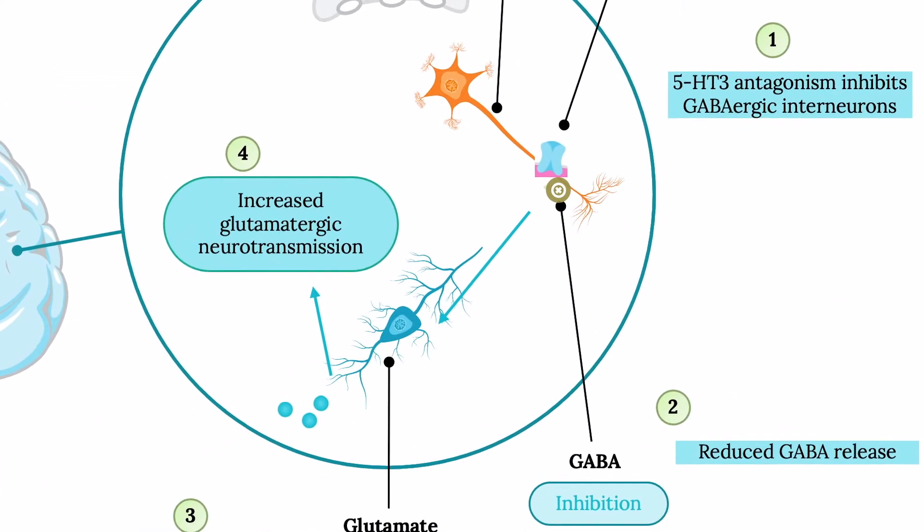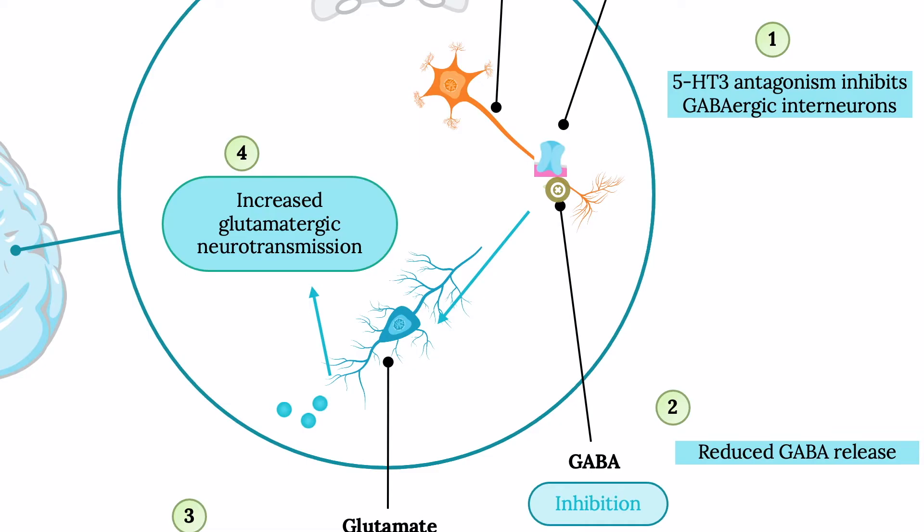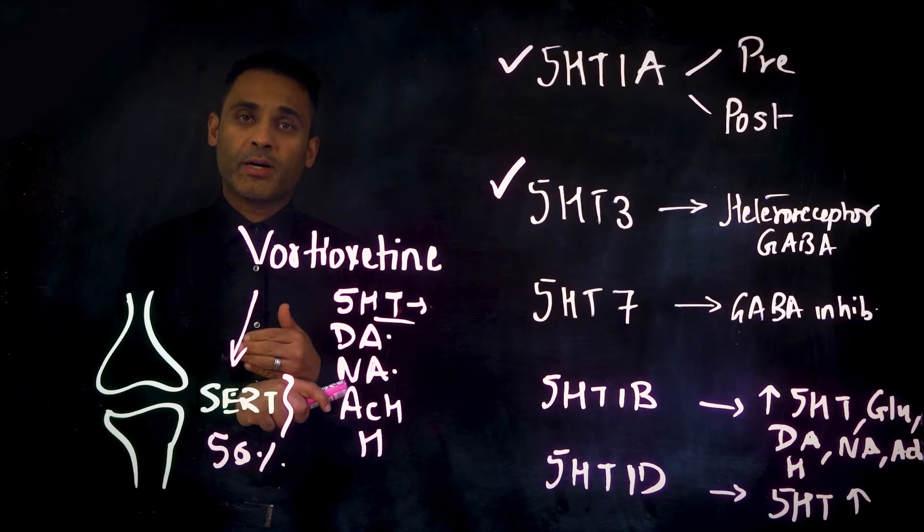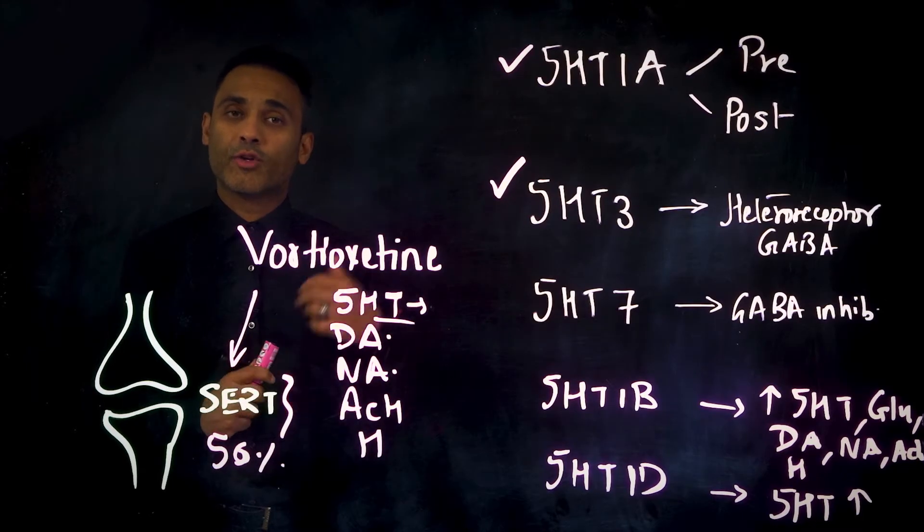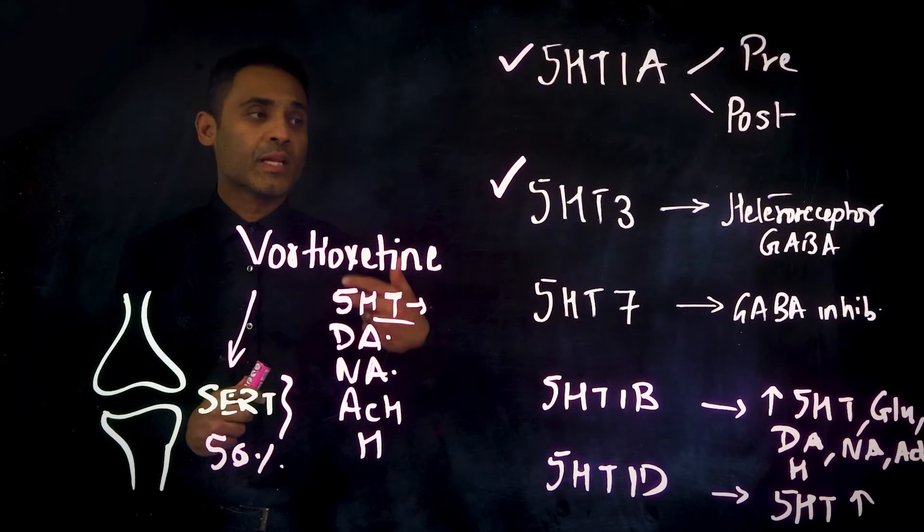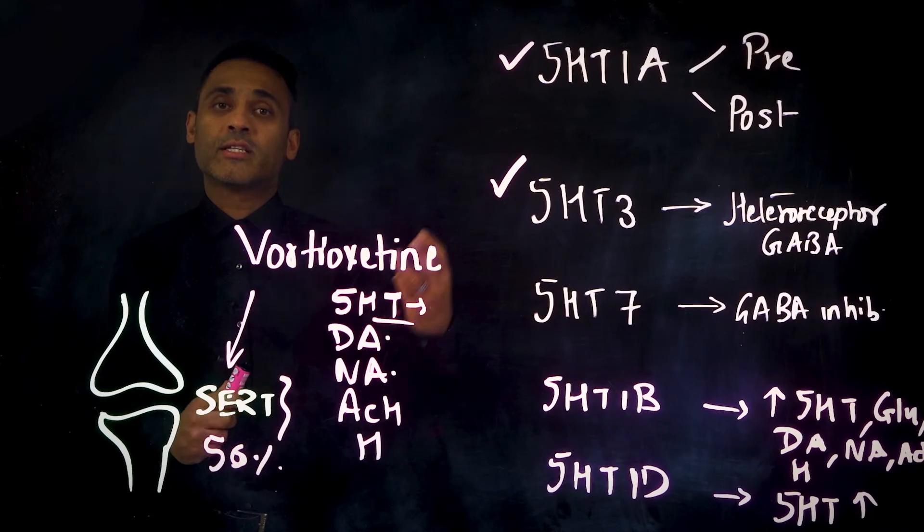So 5-HT3 antagonism at the GABA heteroreceptor inhibits GABA. Inhibition of GABA increases levels of noradrenaline, dopamine, acetylcholine, and serotonin.